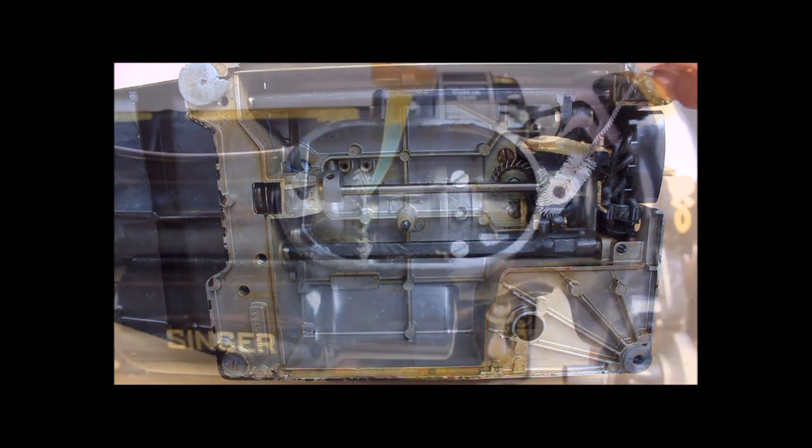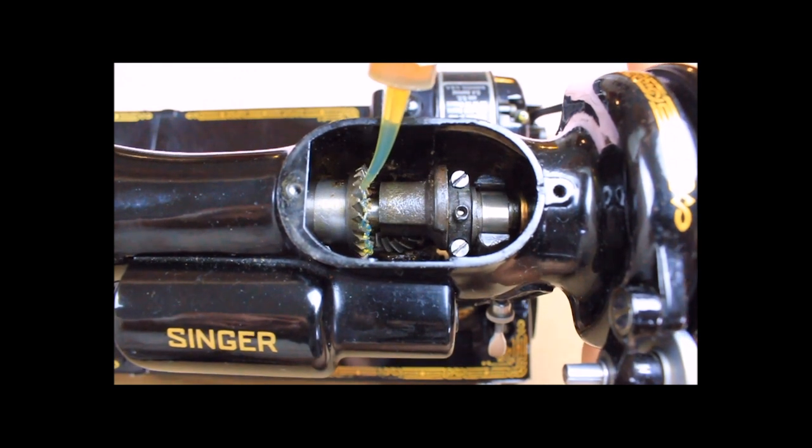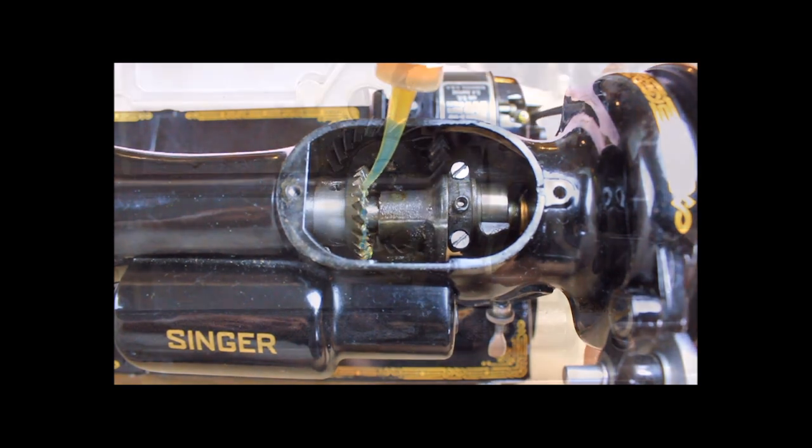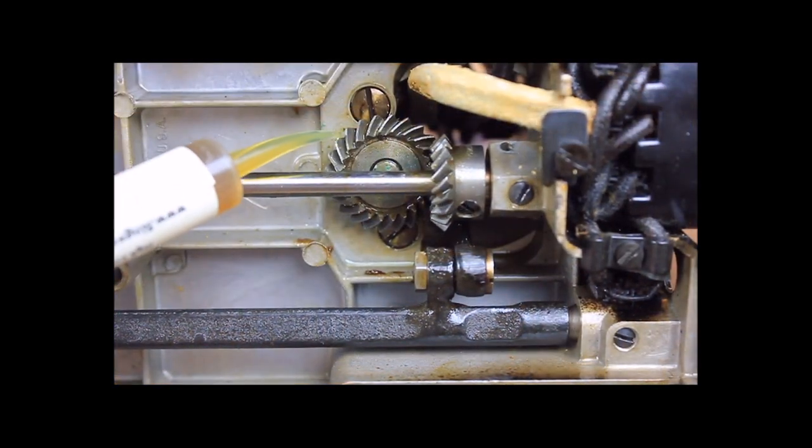Once the gears are clean, the new lubricant can be added by putting a bead of lubricant on the gears and then slowly turning the hand wheel. This will distribute the lubricant to the corresponding gear.